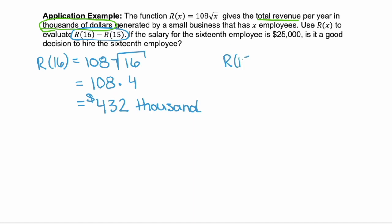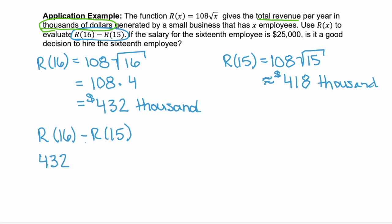So now let's calculate r of 15. r of 15 would be 108 times the square root of 15. 15 is not a perfect square, so we're going to plug that into the calculator, multiply it by 108, and we get approximately 418, or this would be $418,000 of revenue when we have 15 employees. So that means when we calculate r of 16 minus r of 15, we make $432,000 with 16 employees minus the $418,000 we make with only 15 employees. And that's a difference of about $14,000.